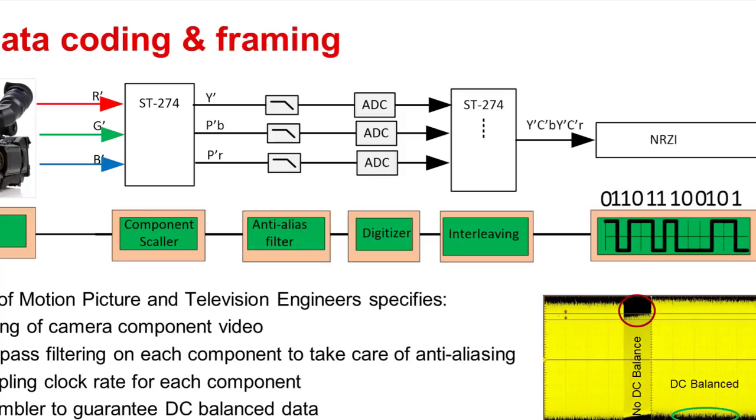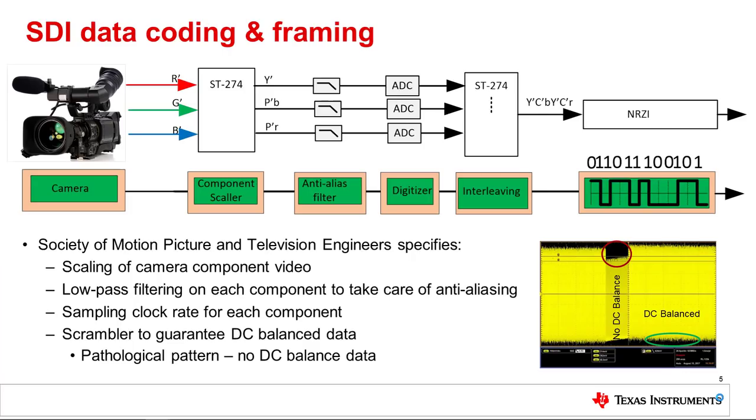Last but not least, SMPTE 274 specifies interleaving and scrambling of the signal. This is done to spread the signal across the whole bandwidth to enable longer cable reach. Another effect of the scrambler is to provide a DC balanced data pattern.